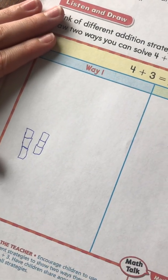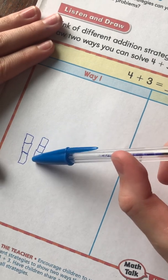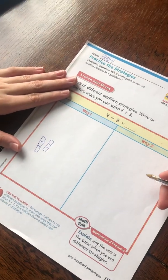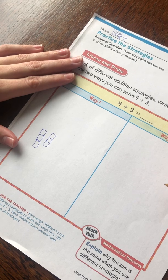3 plus 3. And that equals, count them, Blake. 1, 2, 3, 4, 5, 6. Okay, and we need to get 4 plus 3. So we're going to do doubles plus 1. So we're going to add 1 block.